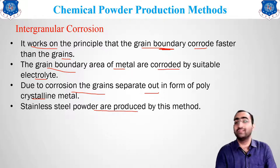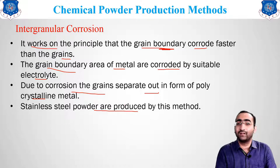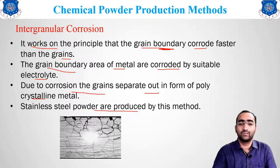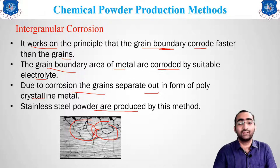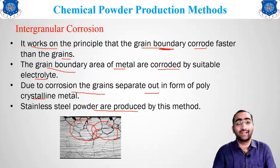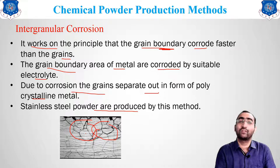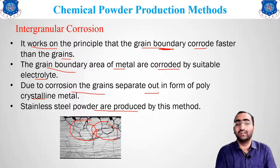Stainless steel powders are produced by this intergranular corrosion method. By corroding and removing the grain boundary material, spaces form and the bulk material becomes brittle. As seen in the figure, cracks are formed between the different grains, making it easy to break down. By heating the cracked, brittle material, we obtain metal powder. Major stainless steel material powders are manufactured using this method.